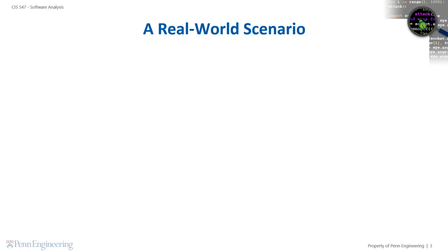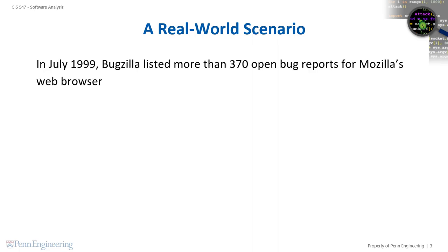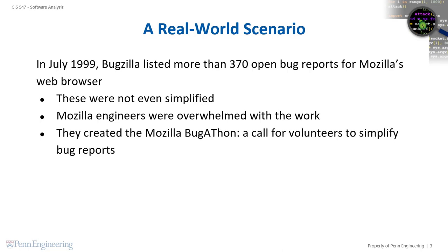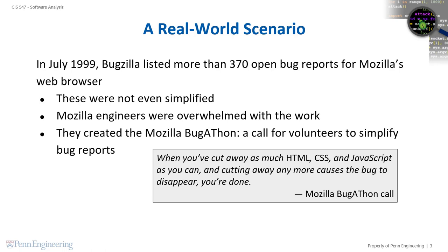Let's look at a real world scenario which should help motivate the necessity for bug minimization. In July of 1999, Bugzilla, the Mozilla bug database, had over 370 unresolved bug reports for Mozilla's web browser. These reports weren't even simplified and the bug queue was growing by the day. Mozilla's engineers became overwhelmed with the workload. Under this pressure, the project manager sent out a call for volunteers for the Mozilla Bugathon — volunteers to help process the bug reports. Their goal was to turn each bug report into a minimal test case. Volunteers who simplified 5 reports would be invited to the launch party, and those who simplified 20 reports would receive a t-shirt signed by the engineering team. Clearly, Mozilla would have benefited from an automated bug minimization process here.